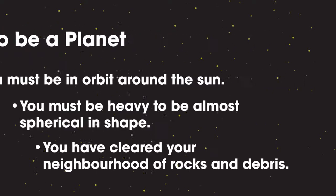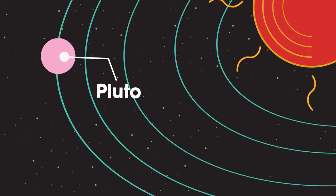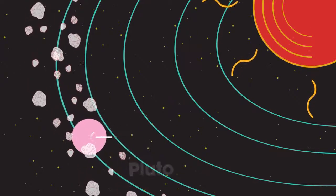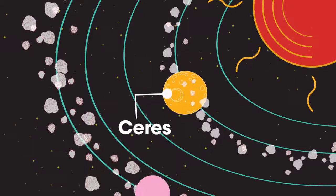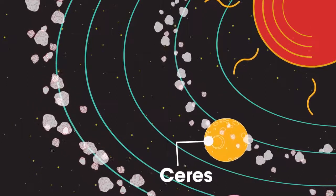Pluto joined other named dwarf planets, which are bodies that orbit a star and have a stable shape, but have not cleared their orbit of other debris. The large asteroid Ceres is another example of a dwarf planet, and others well beyond Pluto are being discovered.